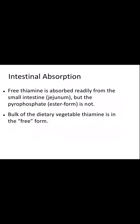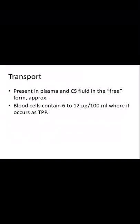Regarding intestinal absorption, free thiamine is readily absorbed from the small intestine (jejunum), but the pyrophosphate ester form is not. Thiamine is present in free form and as thiamine pyrophosphate, which is the biologically active form. Most dietary vegetable thiamine is in the free form and gets absorbed readily. In transport, thiamine is found in plasma and cerebrospinal fluid in the free form; blood cells contain 6–12 micrograms per 100 mL as thiamine pyrophosphate.